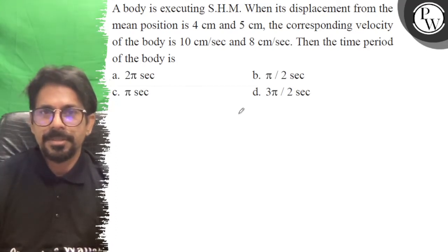Hello virtual, let's see the question. A body is executing simple harmonic motion. When its displacement from the mean position is 4 cm and 5 cm, the corresponding velocity of the body is 10 cm/sec and 8 cm/sec.